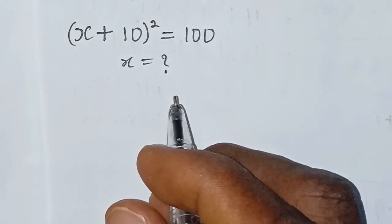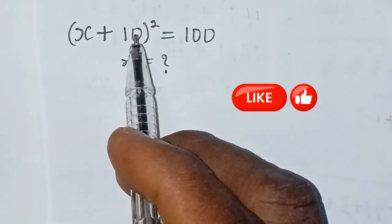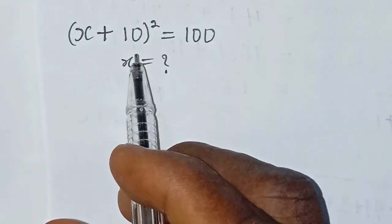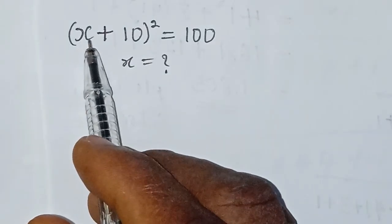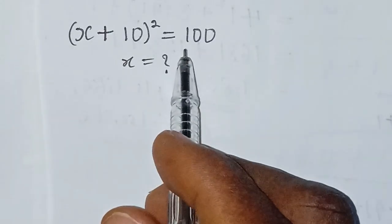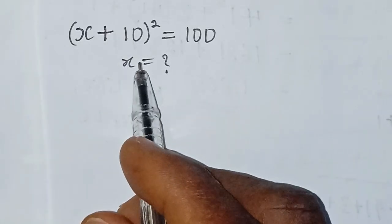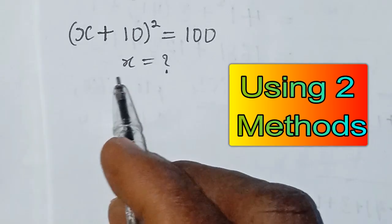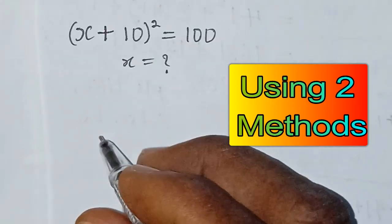Hi everyone, welcome to yet another exciting lesson. Here we have an interesting question to solve: (x + 10)² = 100. What is x? We need to find the value of x. In this lesson we are going to approach this question with two methods, so let's get started.